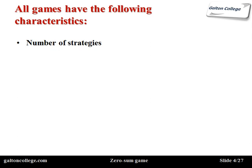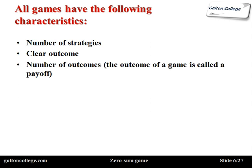Games have a number of strategies. They also have clear outcomes. We have to know when the game is over, how we can tell who's winning, and be able to assess the game as it goes through. So we have to have some clear indication of how the game has been conducted and what the outcomes are. The outcome of a game we call a payoff. In chess, the outcome could be checkmate or stalemate. So we know when the game has reached that point.